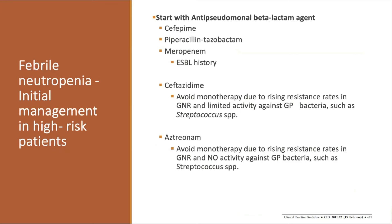Recommendations state we start with an anti-pseudomonal beta-lactam agent: cefepime, piperacillin-tazobactam, or meropenem if there is a history of ESBL organisms. We do not recommend ceftazidime or aztreonam alone due to the risk of breakthrough infections and resistance, and because ceftazidime has very weak coverage for gram-positive organisms such as GI strep, while aztreonam has essentially no coverage for gram-positives. If using these agents, you must combine with vancomycin.